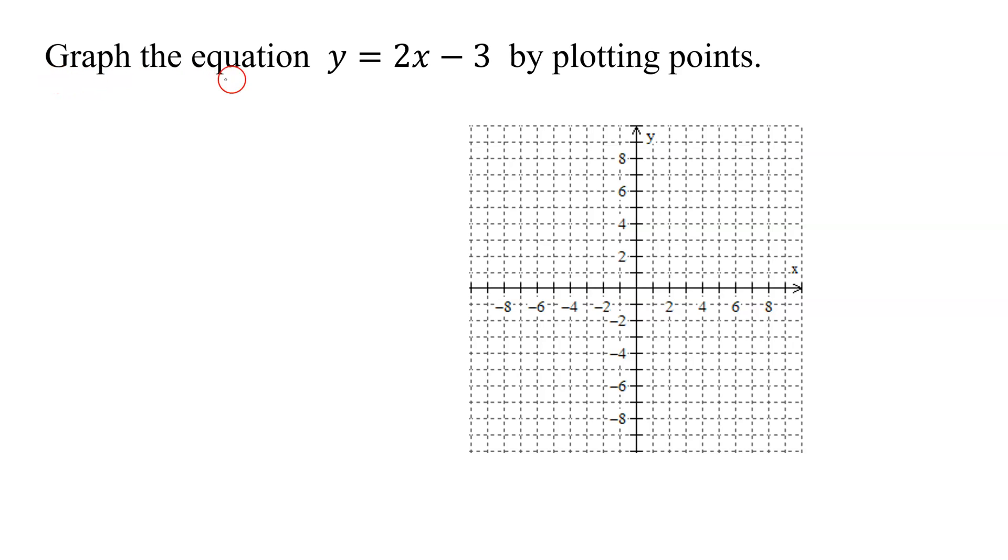In this example, we need to graph the equation y equals 2x minus 3 by plotting points. How many points do you have to have to graph a straight line? You only need 2. I strongly suggest you plot 3 points because if they don't all lie on a straight line, it tells you you've made an arithmetic error.